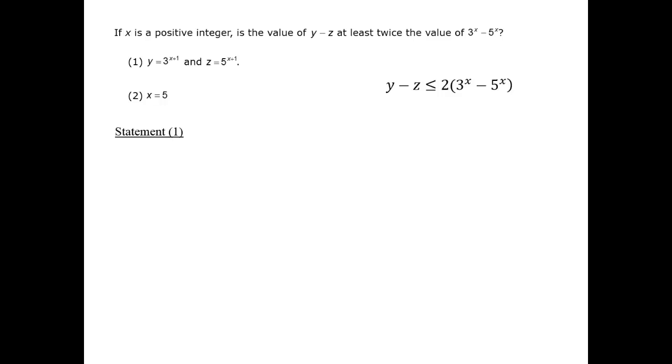Statement 1 gives us values for y and z that we can plug into our expression of interest. Plugging them in, we get the following expression. We can expand the right side by multiplying out the 2. At this point, we could try to compare the first terms and the second terms of the inequality, or we could try to get the 5's on one side and the 3's on the other. Let's try the latter route by bringing the 3's over to the left side and the exponents with the bases of 5 over to the right side.